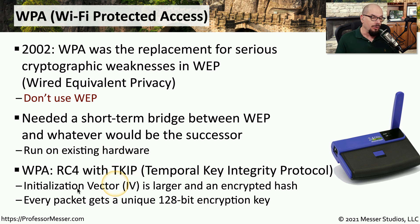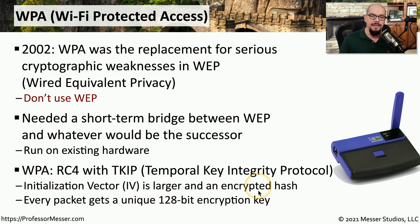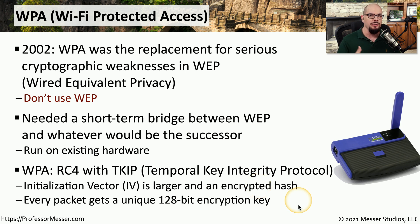TKIP included a larger initialization vector, or IV, and it encrypted the hash communication being sent across the wireless network. Every packet sent across the wireless network had its own encryption key, which resolves some of the problems we had with the older WEP protocol.